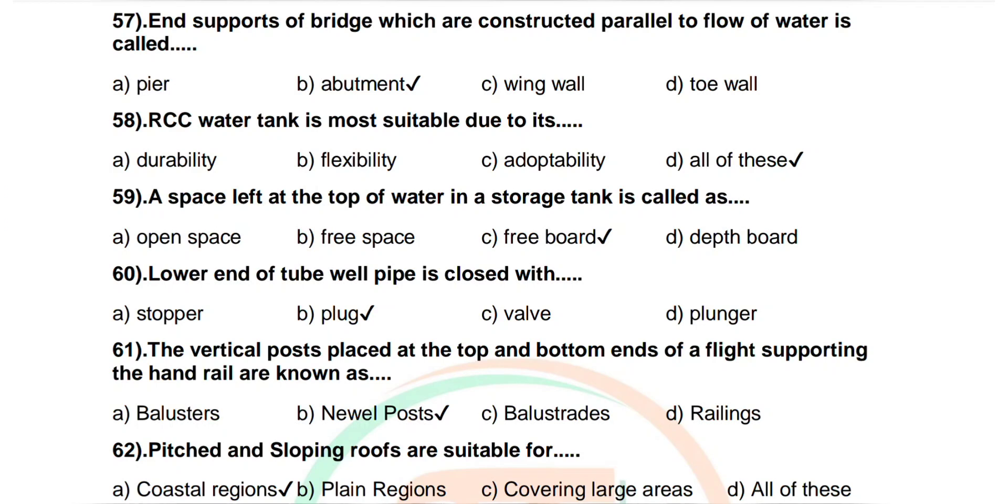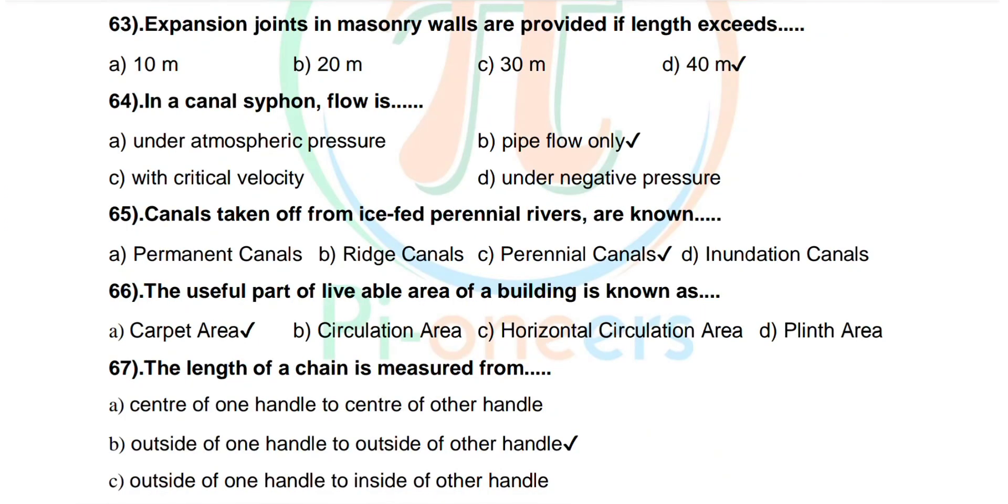Question number 62: Pitched and sloping roofs are suitable for. Options are coastal regions, plain regions, covering large areas, all of these. Correct answer: coastal regions. Question number 63: Expansion joints in masonry walls are provided if length exceeds 40 meters.